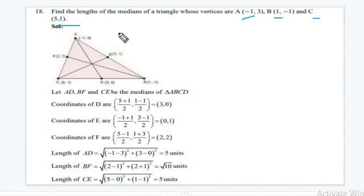So suppose a point D bisects BC. So we can write D as (1+5)/2 and it will be 3, and (1-1)/2 that is 0. So D = (3,0). And similarly we can write E.